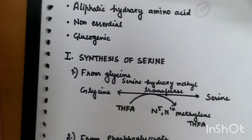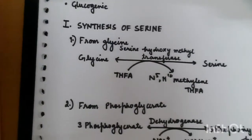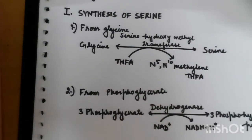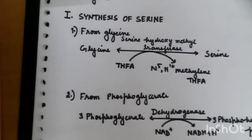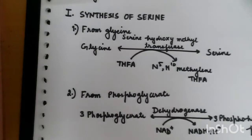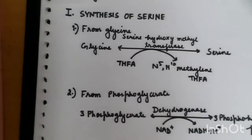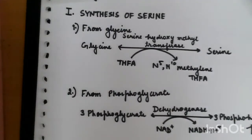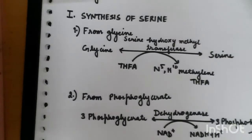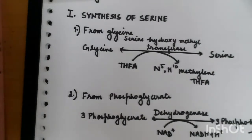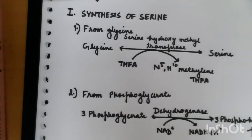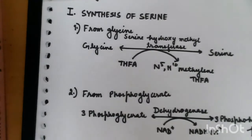Now we talk about the synthesis of serine. Firstly, from glycine — glycine and serine are interconvertible. Serine can be formed from glycine in the presence of the enzyme serine hydroxymethyl transferase. Here, tetrahydrofolic acid is converted into N5,N10-methylene tetrahydrofolic acid.